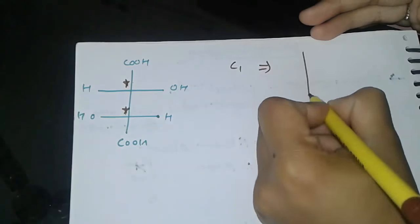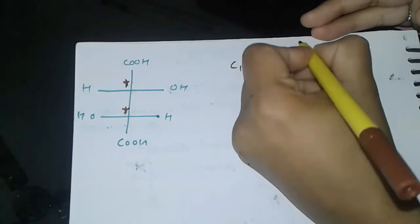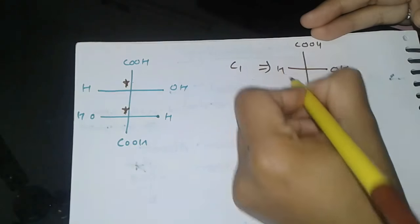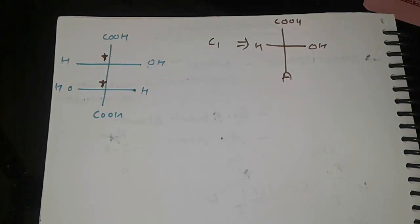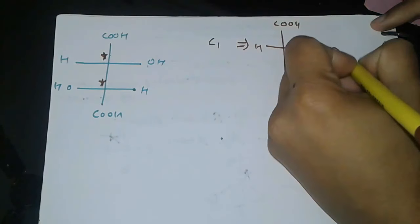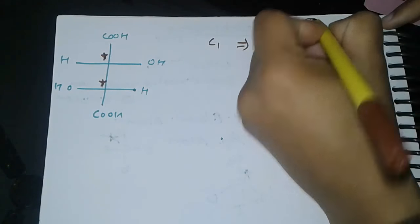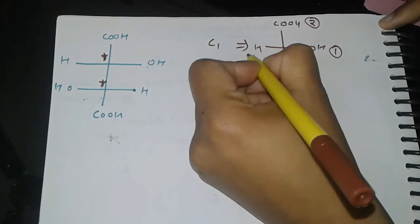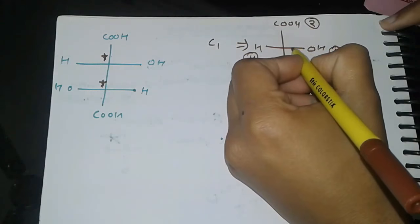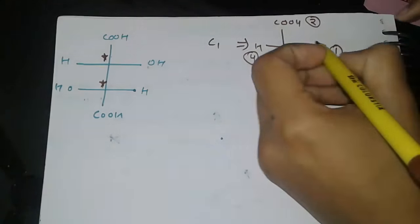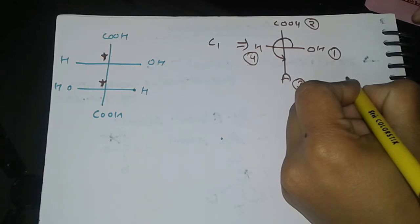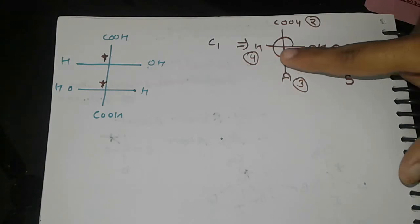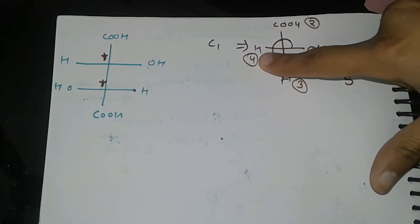So start with this. If we talk about the first carbon C1, its representation is this type. I'm giving this whole group A. We will give the priority one, two, three, and four.